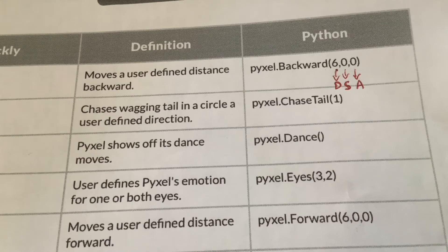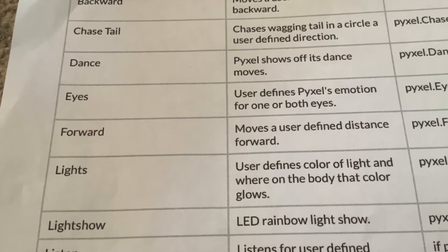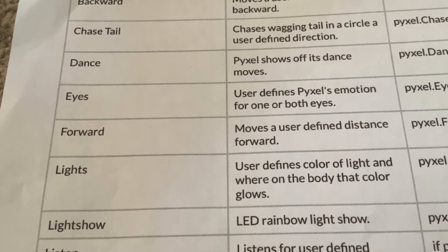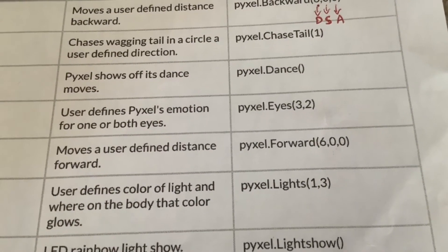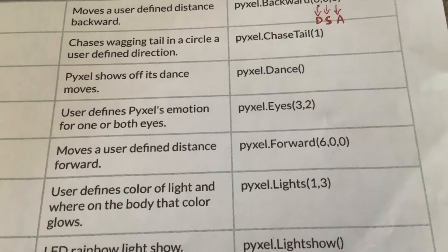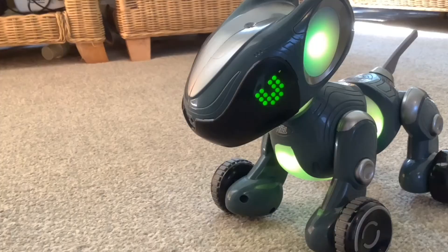I will be going into more detail in the future finding out what numbers are assigned for colors and eye sequences. The next command is forward — moves a user-defined distance forward. The Python code is 'pixel.forward(6, 0, 0)': six is six inches, the first zero means slow, and the other zero means inches rather than centimeters. We're on button five now.